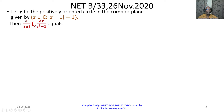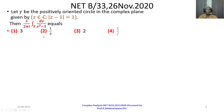Then 1 over 2πi times the integral taken around gamma of dz over z cubed minus 1 equals — four options are given: 1, 2, 3, 4.